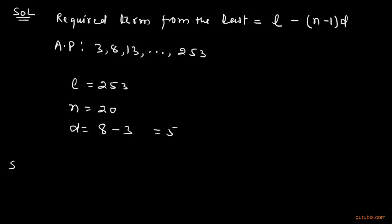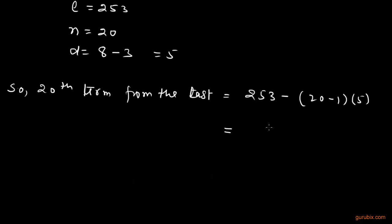Put it in the formula. So the 20th term from the last equals L, which is 253, minus N is 20 minus 1, and D is 5. Now we shall calculate this value.